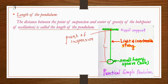The point of suspension and the center of gravity of the small sphere, which is the bob, define the length of the pendulum. The distance between the point of suspension and the center of gravity of the bob is called the length of the pendulum.